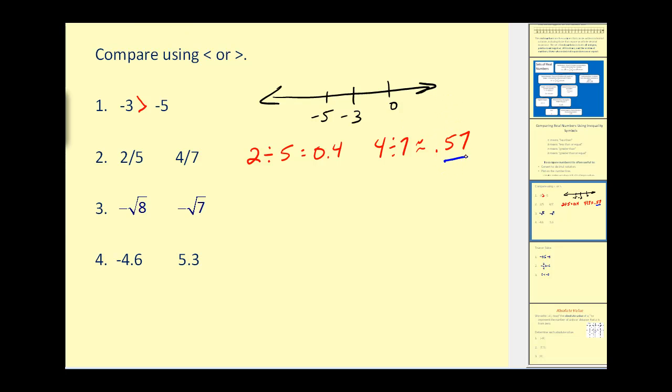Again, in decimal form, it's easier to see that 4/7 is larger than 2/5. Therefore, we would read this: 2/5 is less than 4/7.